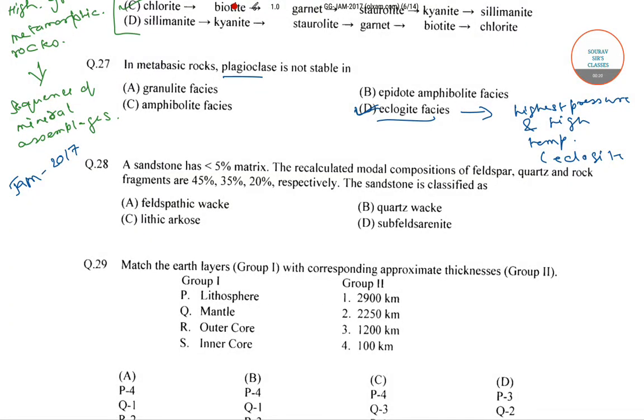Now here we have a sandstone that has less than 5% matrix. The recalculated model composition of feldspar, quartz and rock fragments are 45%, 35% and 20% respectively. Then how would the sandstone be classified?